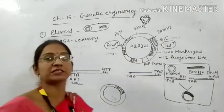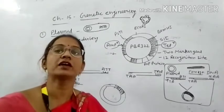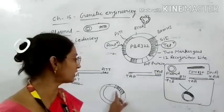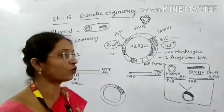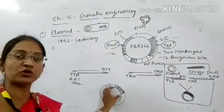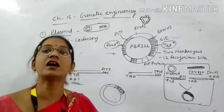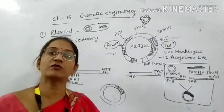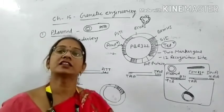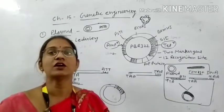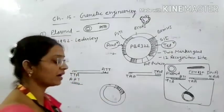After ligation, we introduce the recombinant plasmid into a host cell so that it will be copied. The plasmid will start replication and produce copies. That was our aim — using the plasmid as a cloning vector so that the desired gene will be amplified and ready. This is how plasmid works as a cloning vector.